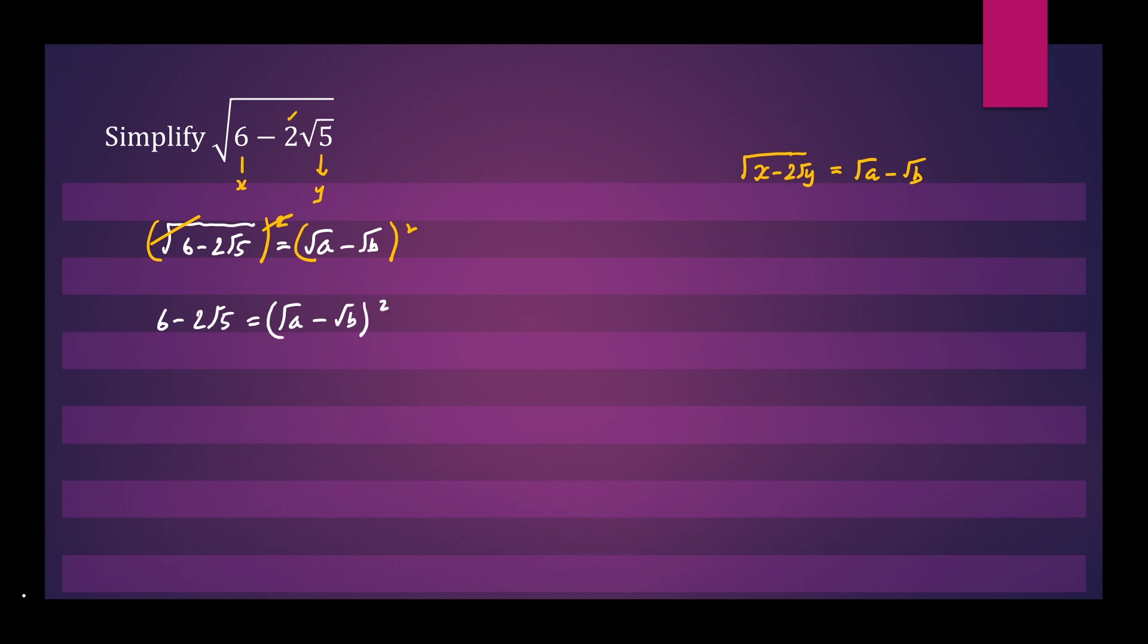So let's now expand the right side using perfect squares. We have 6 minus 2 root 5 equals root a squared minus 2 root a root b plus root b squared.